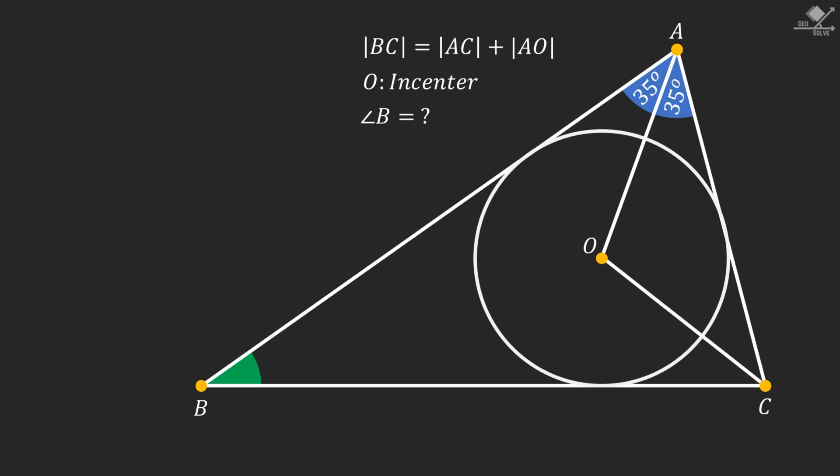First connect point C and the incenter of the triangle. We know that the incenter of a triangle is the intersection point of internal angle bisectors. So call these equal angles as alpha.